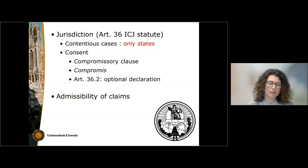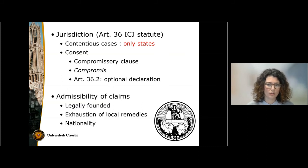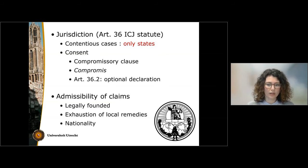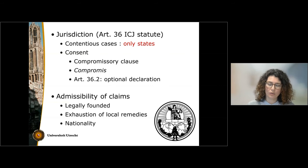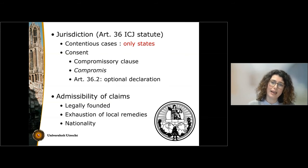Once the court has ascertained its jurisdiction, it must also make sure that the claims are admissible. To do so, it looks at three things: first, whether the claim is legally founded; second, whether the party bringing the claim has exhausted local remedies; and third, whether the facts or violation invoked by the claimant can be linked to the state through the nationality link.